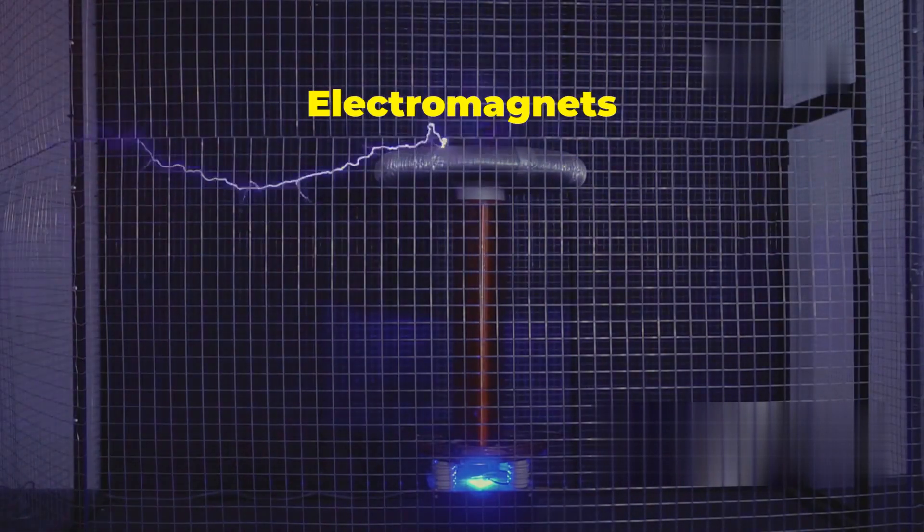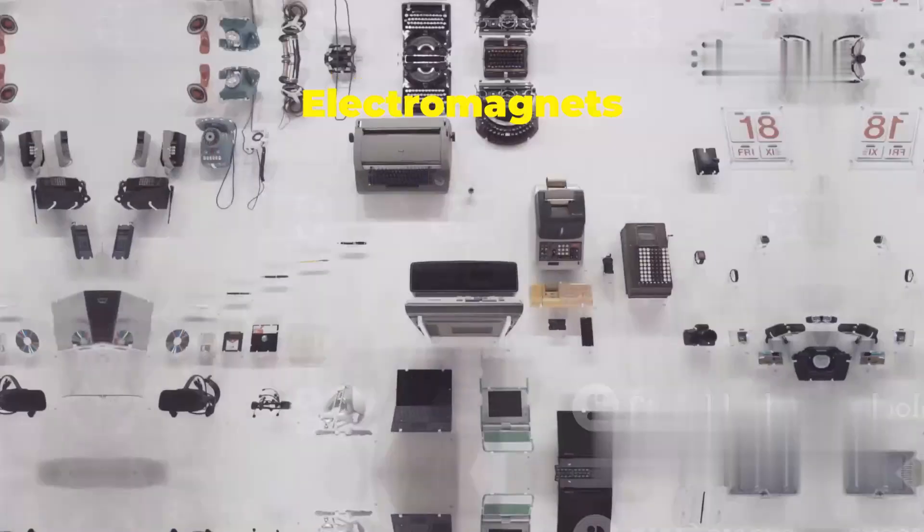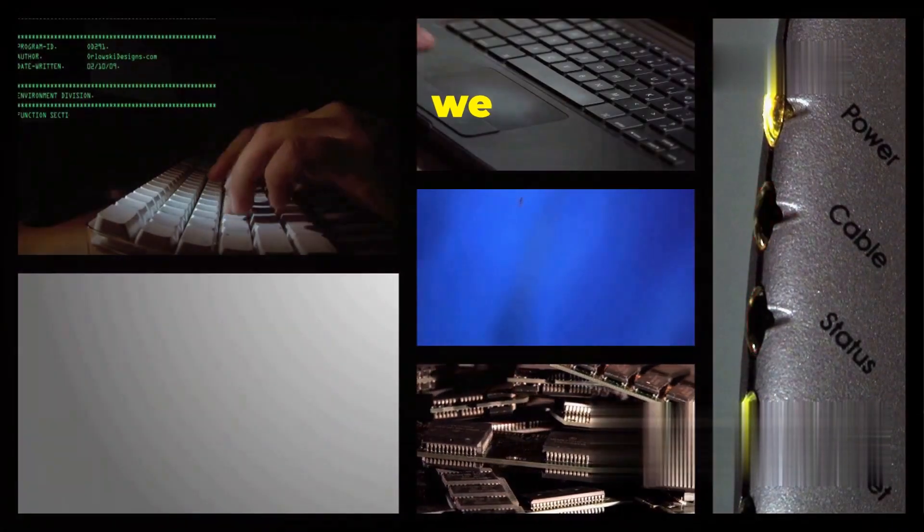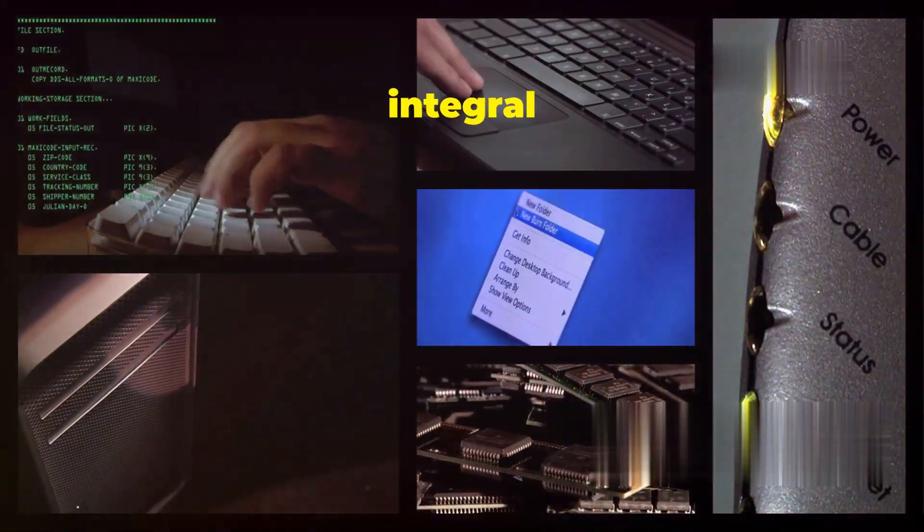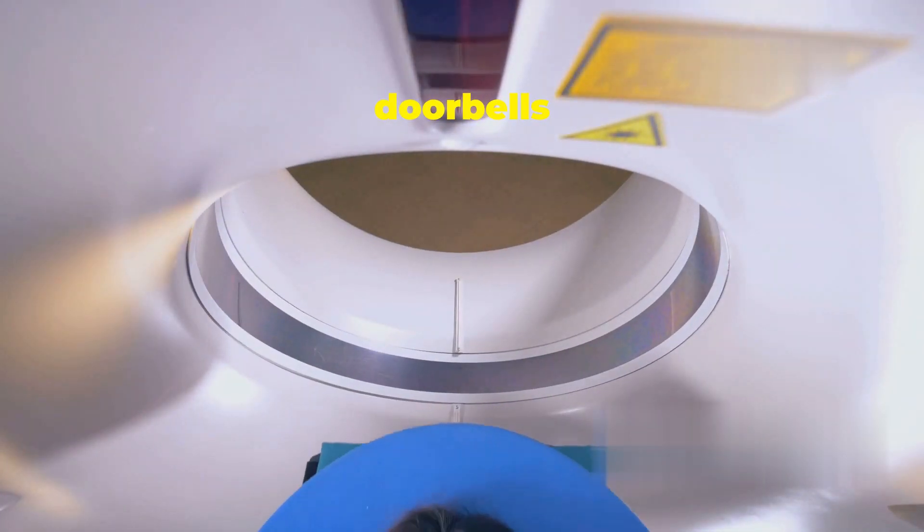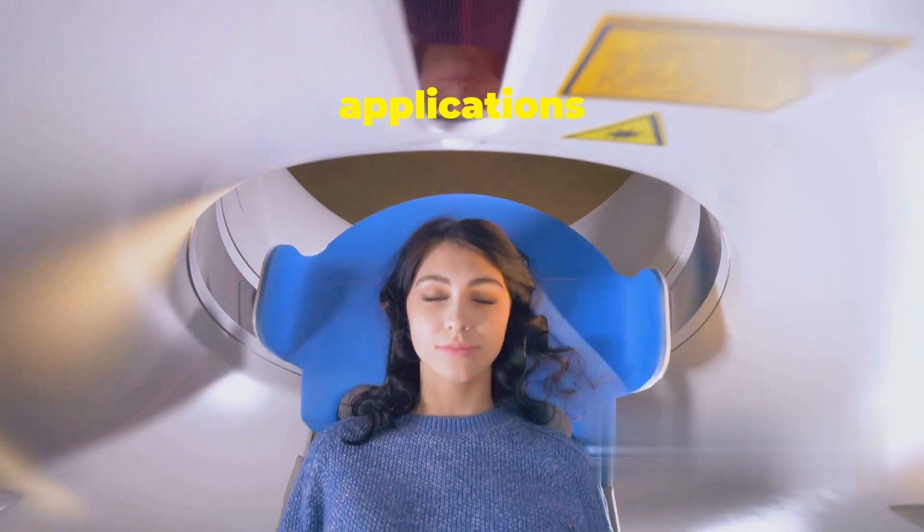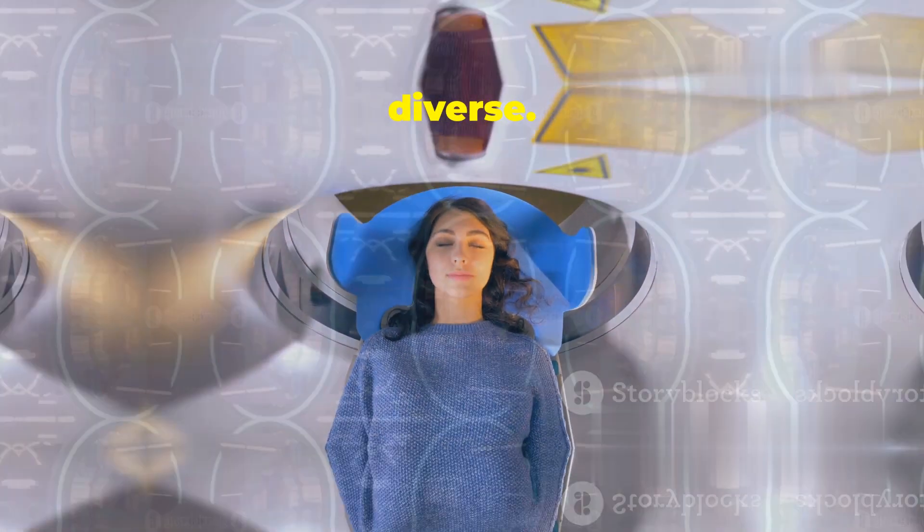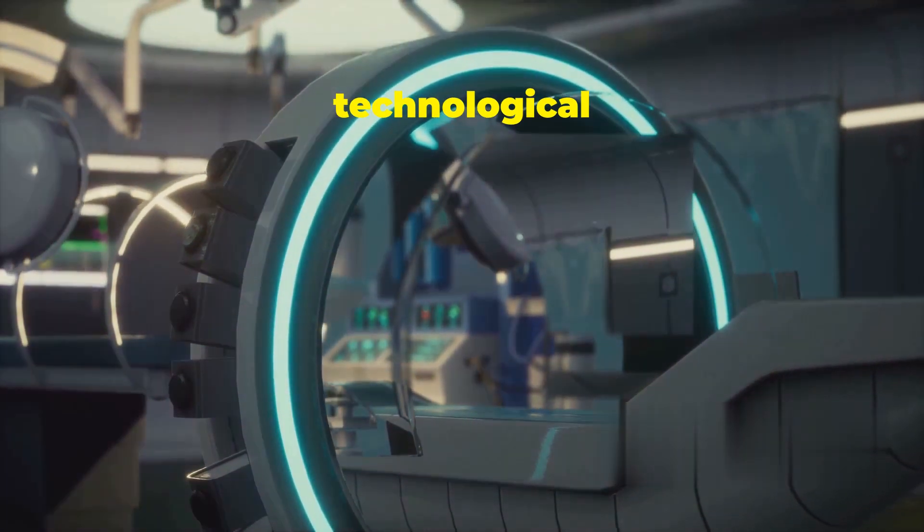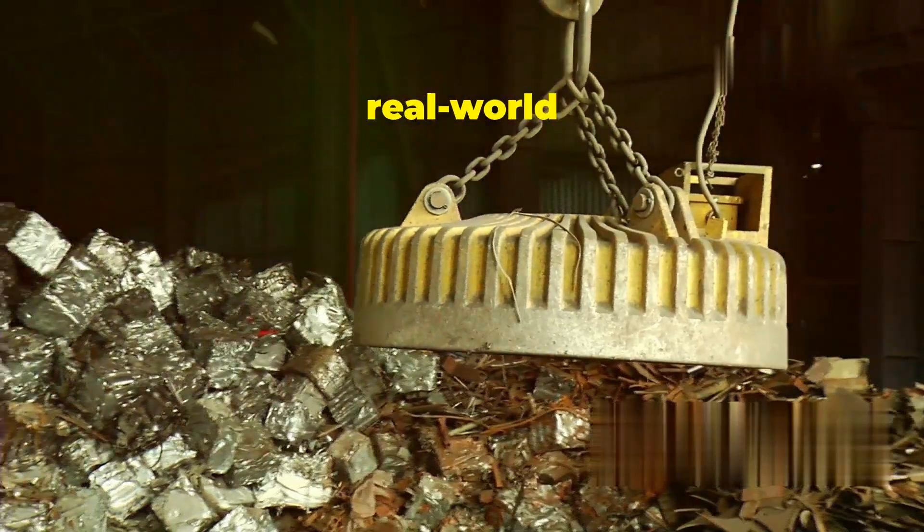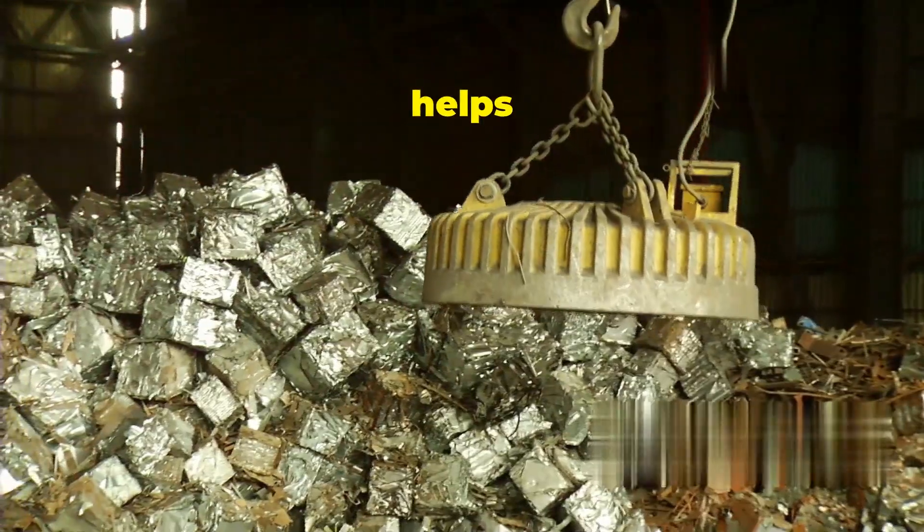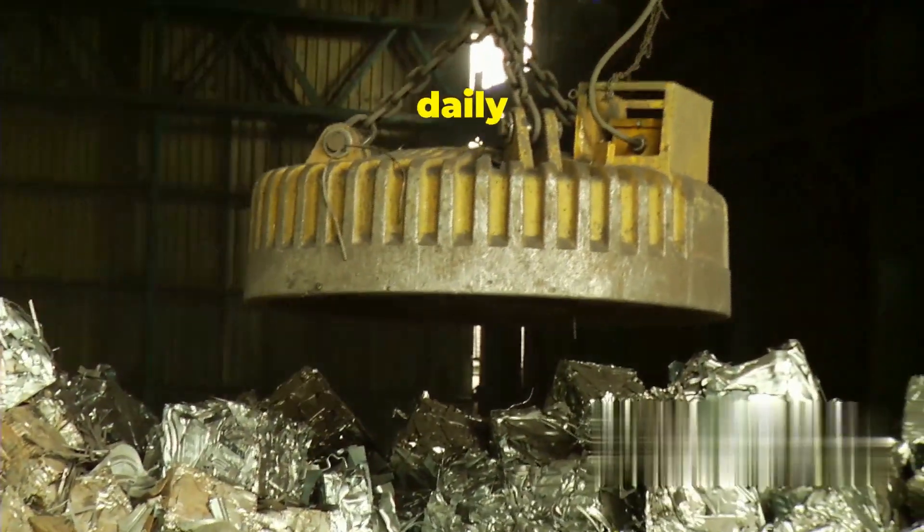Electromagnets are the unsung heroes of the modern world, quietly powering countless devices and systems we rely on every day. They are integral to the functionality of many gadgets and machines that we often take for granted. From simple doorbells to complex medical imaging equipment, their applications are incredibly diverse. Electromagnets are found in both the most basic household items and the most advanced technological innovations. Let's take a closer look at some real-world examples of electromagnets in action.